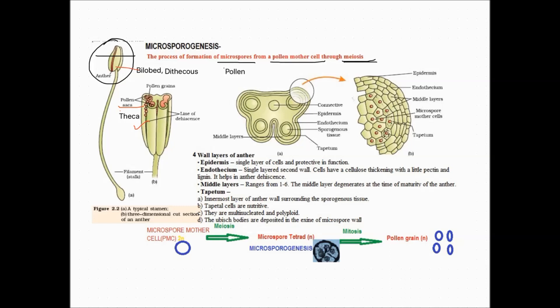Pollen grains are formed inside the pollen sacs and come out after dehiscence of the pollen sacs. The pollen sacs contain pollen grains, which are formed in four chambers. These four chambers are called microsporangia, so each anther has four microsporangia.